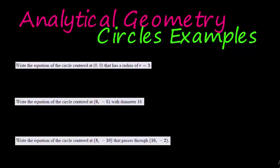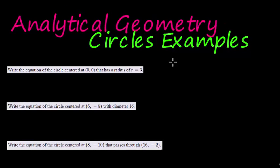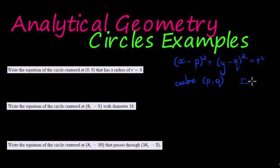We looked in the previous video at the general equation for circles and that equation was x minus p squared plus y minus q squared is equal to r squared, where the coordinate (p,q) is the center of the circle and r is the radius.